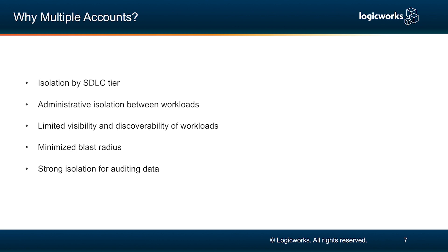Those two points are sort of talking to the same thing from different standpoints. For security, in a worst-case scenario, if there were a breach and somebody had access to your environment, they would not be able to see every one of your applications or every one of your accounts if you have a distributed tiered architecture with multiple accounts. Similarly, if you have multiple accounts, you have a minimized blast radius should one component fail or one application go down. Finally, there's strong isolation for auditing data by business need, so if you have compliant workloads in one account, you don't have to worry about those other non-compliant applications being audited during your audits.